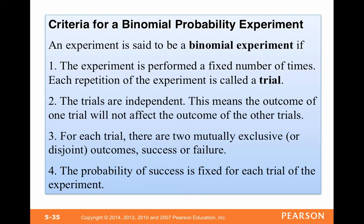This is a big thing that we have to remember in order for an experiment to be binomial. It'll be fairly obvious that an experiment will be binomial, but let's just go over this. The most obvious thing is number three: for each trial, there are two mutually exclusive or disjoint outcomes, and we call those success or failure.